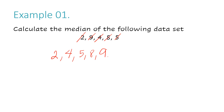Now, because this is an odd number of numbers in my data set, I can find the middle number pretty easily. I have two numbers on the right that I've crossed off, and I have two numbers on the left that I've crossed off, and my middle number is 5. So, 5 is my median.